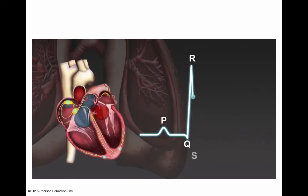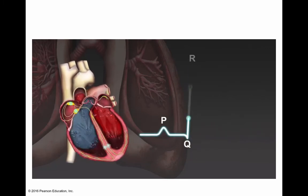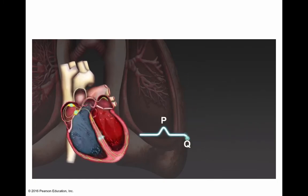During atrial fibrillation, the electrical activity of the atria becomes disorganized. As a result, there is no P wave on the ECG of a patient in atrial fibrillation. The absence of P waves is one of the most important features used to diagnose atrial fibrillation.